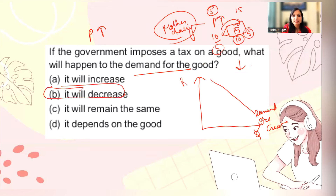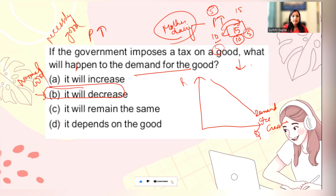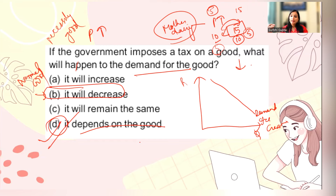But in the case of this question, the question has not specified normal goods. It can also be a necessity good or medicine. If the government taxes medicine, demand will not be reduced. Similarly, if the government taxes cigarettes or alcohol, demand will not reduce because they are addictive goods. So the correct answer is: it will depend on the type of good — whether it is a necessity, luxury, or addictive good.